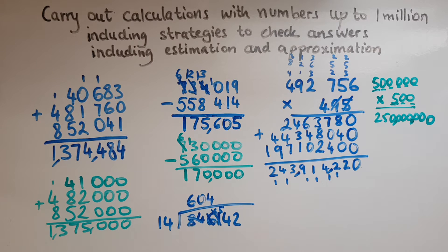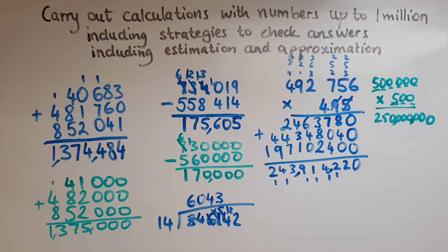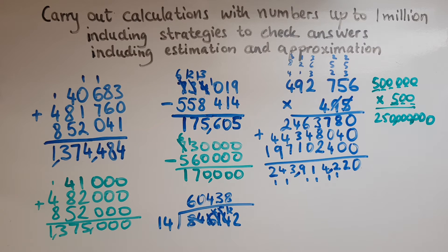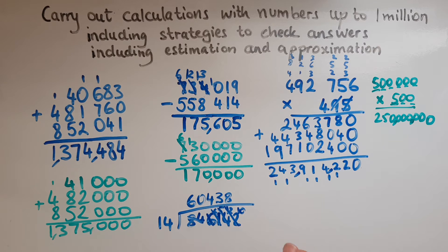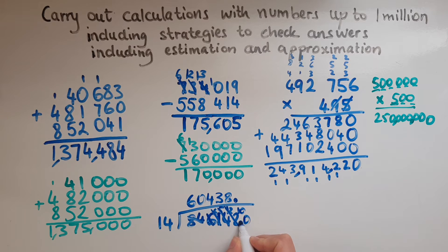Now we'll look at how many 14s fit into 54, and that is 3 of them, because 14 times 3 gives us 42. Taking 42 away from 54 gives us 12. So we've got now 122. How many 14s would fit into 122? Adding up we find there are 8 of them, because 14 times 8 gives us 112, so there is 10 remaining. At this point we're finished with the whole number, and that's where we put a decimal point. We can add as many zeros as we like after the decimal point. Some people like to put a decimal point in the dividend as well, and that's perfectly fine.